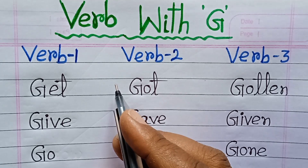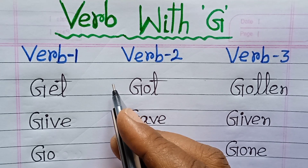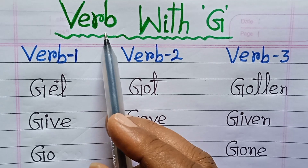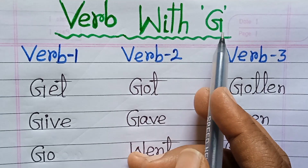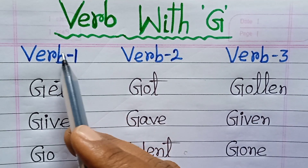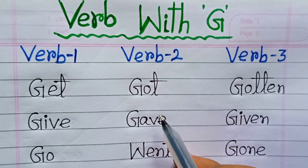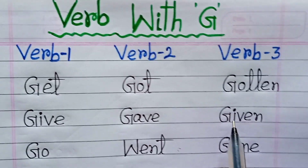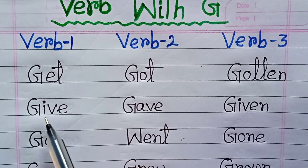Hello friends, welcome to our channel RKWay. Today in this video we are going to learn verbs with letter G — Verb 1, Verb 2 and Verb 3. So let's start.